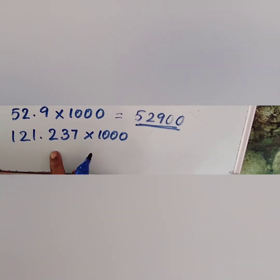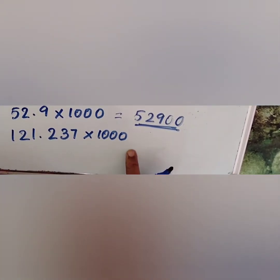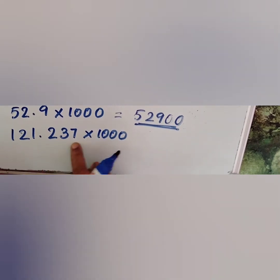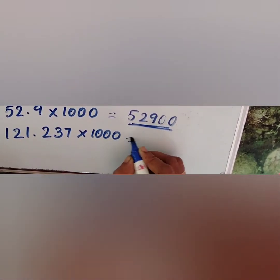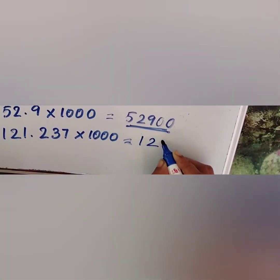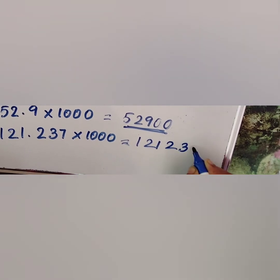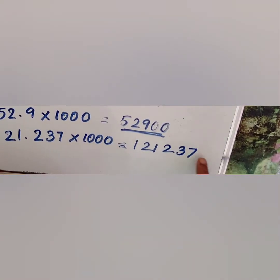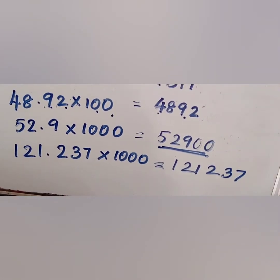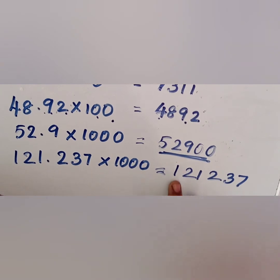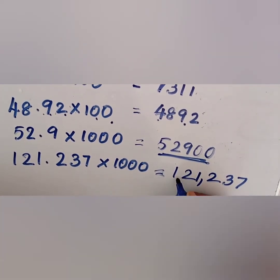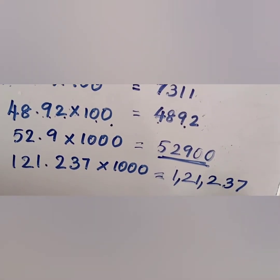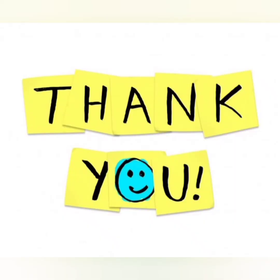Next question, 121.237 into 1000. That is, the answer will be, shifting three places, we get 121,237 is our answer. As 1000 has three zeros, three places are shifted. Thank you for watching.